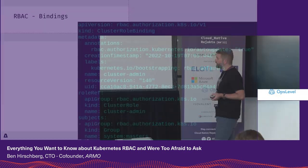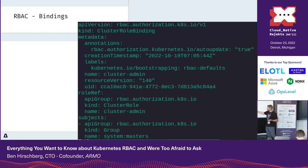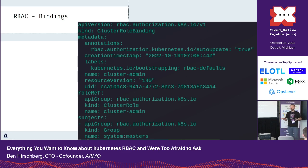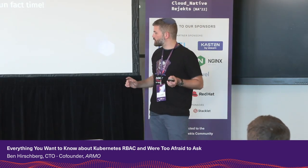Another example from Minikube is the most basic and most important user: the cluster admin. The cluster admin role is bound to the system:masters group. Everyone in the system:masters group can use the cluster admin role, which is the role with all the wildcards we saw before.